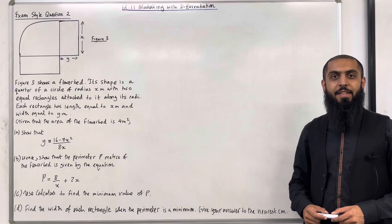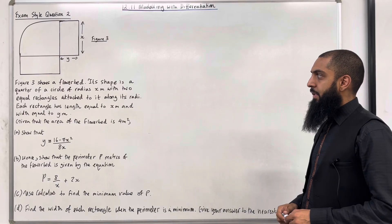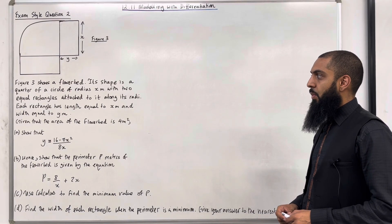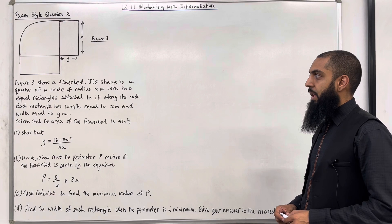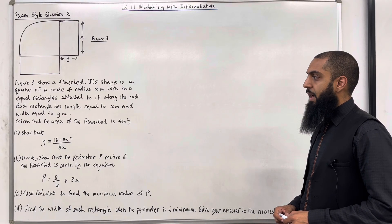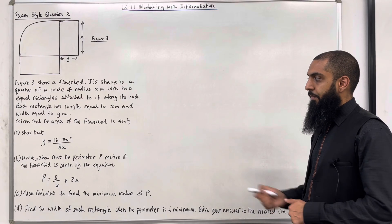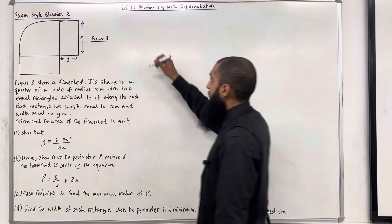Moving on to exam style question 2. Figure 3 shows a flower bed. Its shape is a quarter of a circle of radius x metres, with two equal rectangles attached along its radii. Each rectangle has length equal to x metres and width equal to y metres. Given that the area of the flower bed is 4 metres squared, Part A asks us to show that y equals (16 minus pi x squared) over 8x.